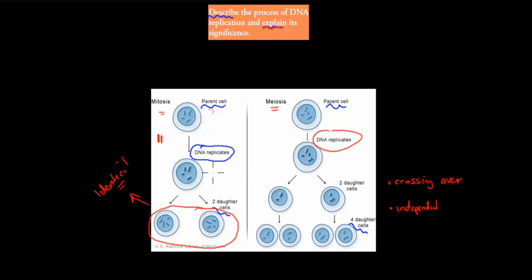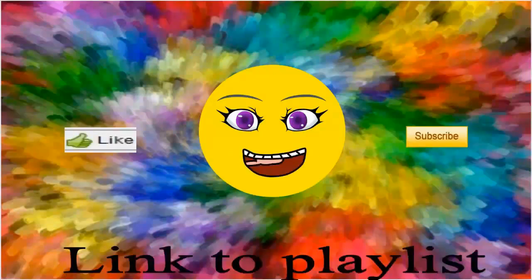The same applies to meiosis — that's important to make sure we can pass our DNA to our offspring. If we can't replicate our DNA, we won't be able to produce four daughter cells from one parent cell. So DNA replication is really important for both mitosis and meiosis — without it, neither process would be able to happen. Thank you for watching.